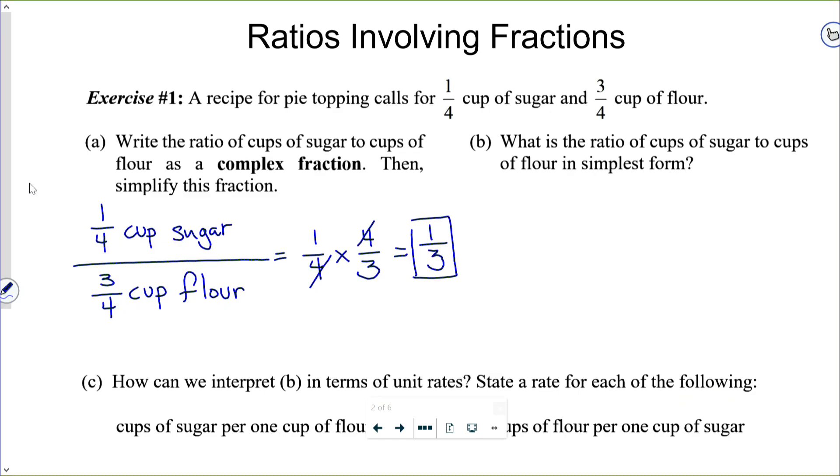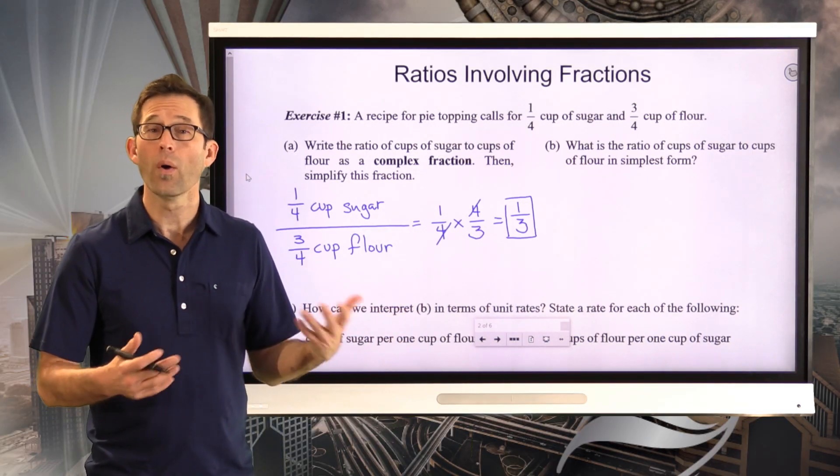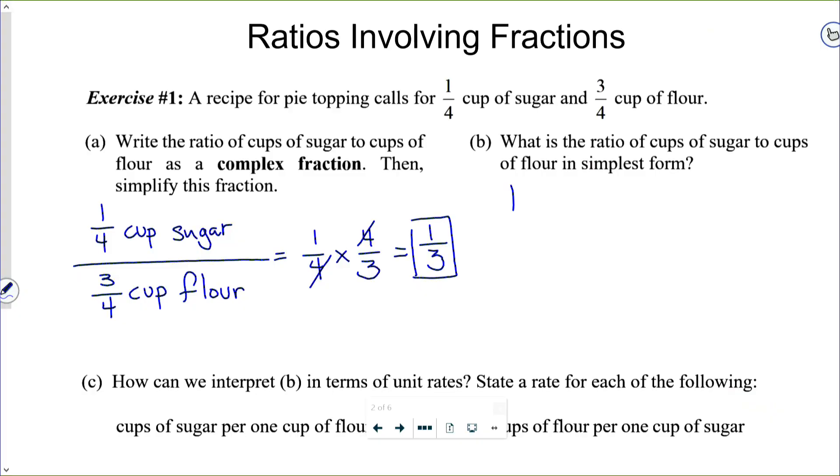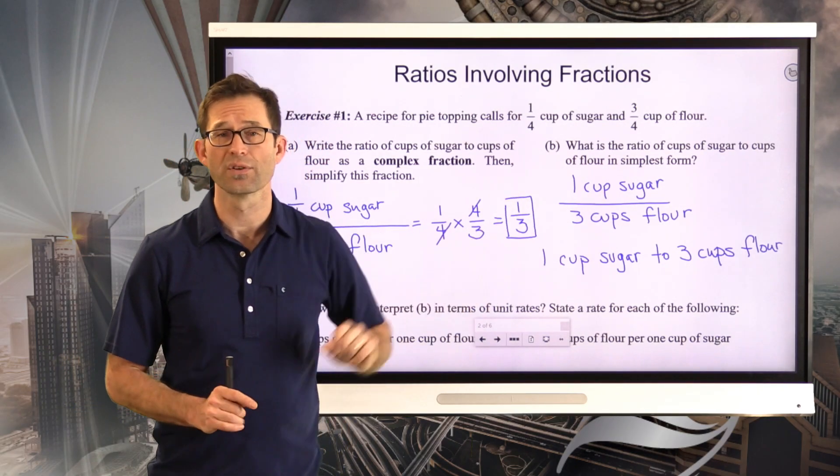Now, letter B. What is the ratio of cups of sugar to cups of flour in simplest form? Well, we essentially have it right there, but what we could now say is we could say that it's one cup sugar to three cups flour. That's one way to state it in its simplest form. You could also say one cup sugar to three cups flour. Either one of these would be a very nice way to express your answer.